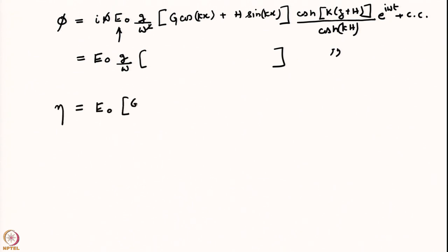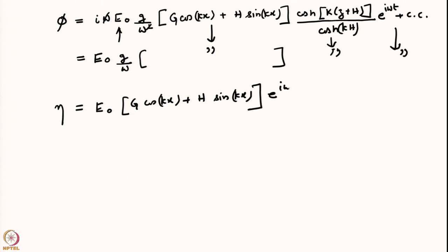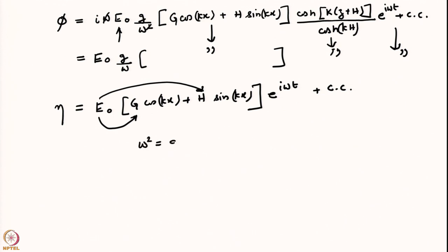There is also an expression for eta: E₀ (g cos kx + h sin kx) into e^(iωt) plus complex conjugate. The E₀ can be absorbed into these constants to form new complex constants. For the unforced case we are just recovering what we had known earlier — the dispersion relation ω² = gk tanh(kh).